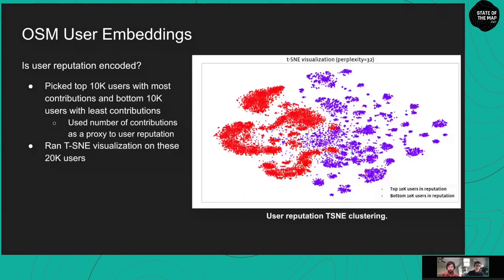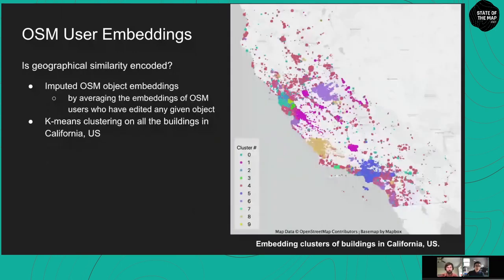Before applying the trained embeddings for vandalism detection, we want to run some sanity checks to make sure embeddings work as expected. The first question: is user reputation encoded into the embeddings? To answer this, we used number of contributions as a proxy for user reputation, picked the top 10,000 users with the most contributions and the bottom 10,000 with the least, then applied t-SNE. These two groups form two well-separated clusters, indicating that user reputation has been captured as a characteristic of the embeddings.